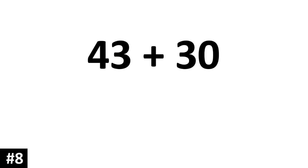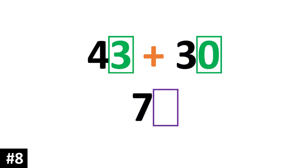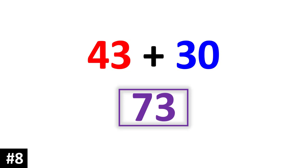How about 43 plus 30? First we just focus on the tens column. Adding them together we have 7 tens. Focusing on the ones: 3 plus 0 gives us 3. The answer is 73.